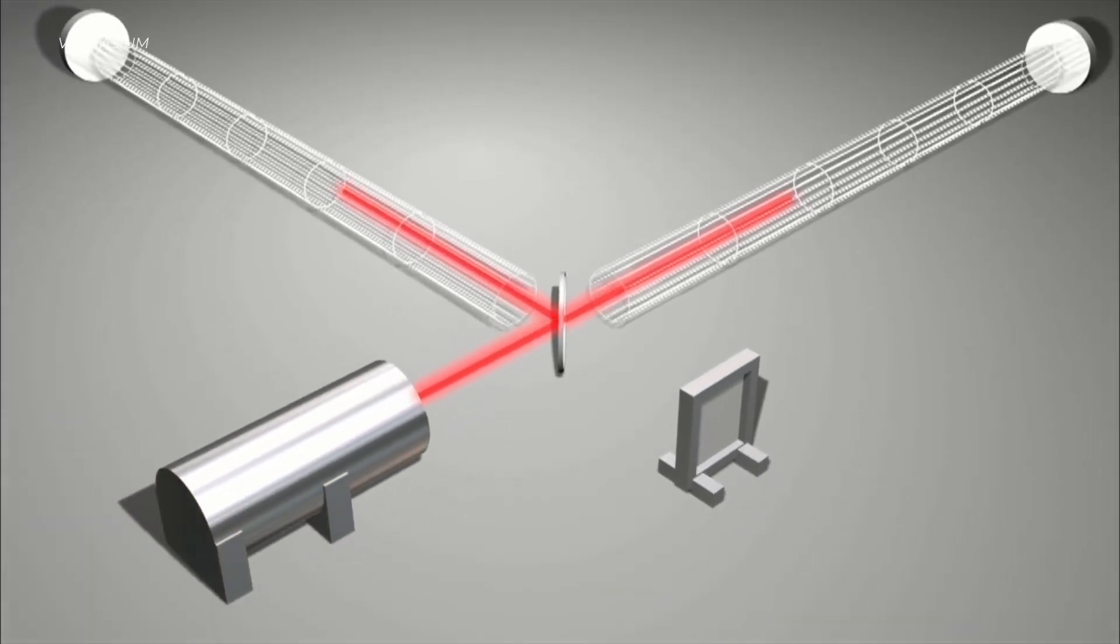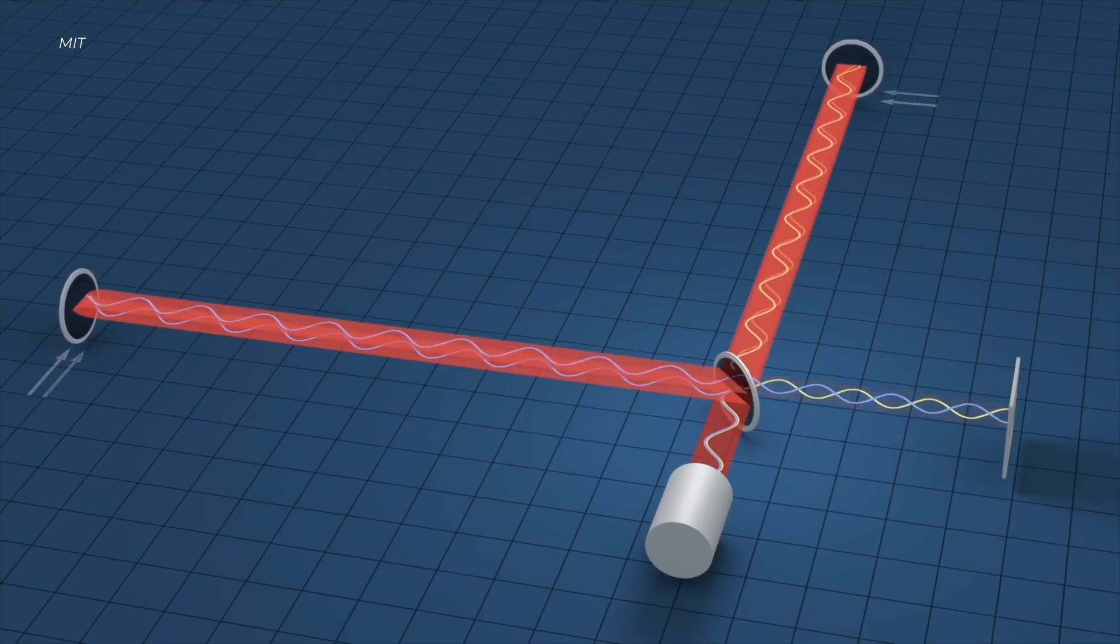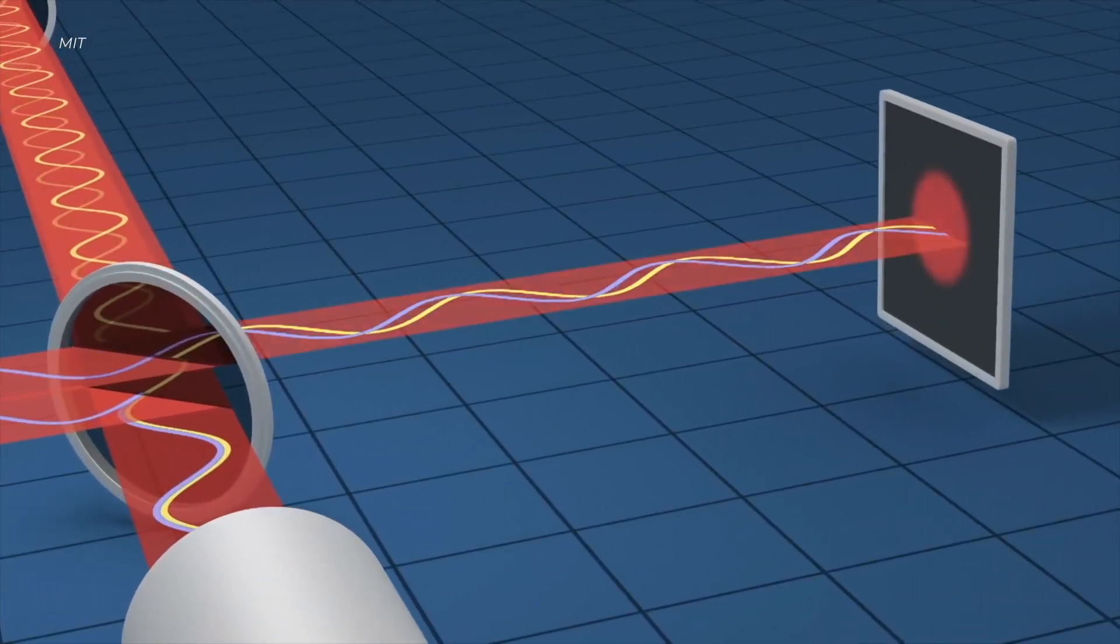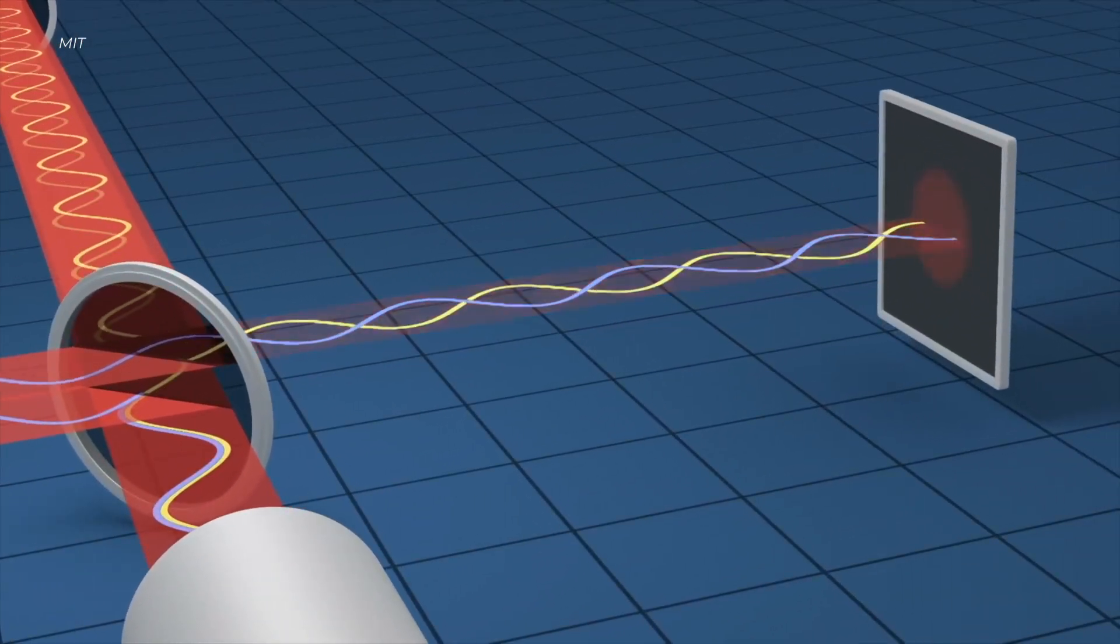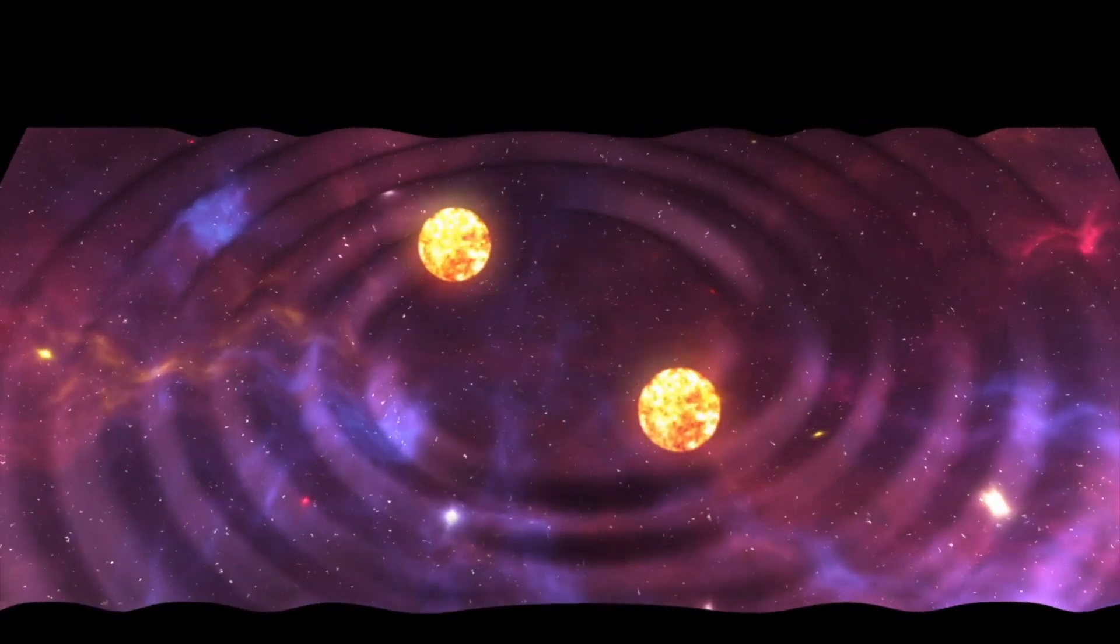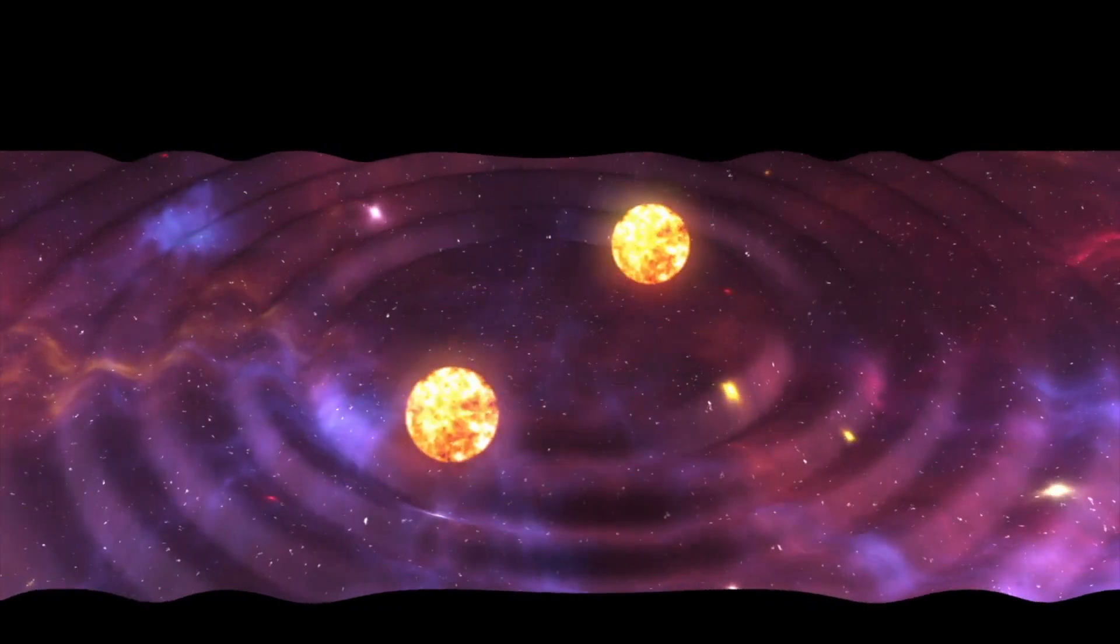LIGO uses a series of highly sensitive lasers inside two arms that are four kilometers each. If the lasers in one of these arms were to shift more than the other, it would indicate that a gravitational wave has passed through Earth, which means a ripple in the fabric of space caused one arm to briefly be longer or shorter than the other by an incredibly small amount.